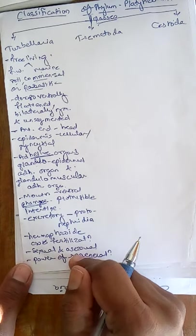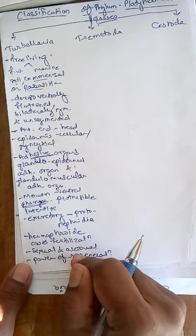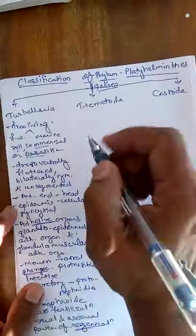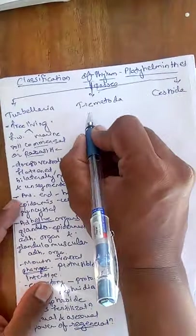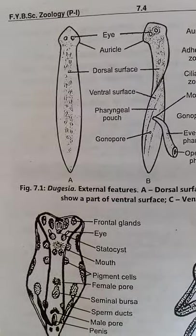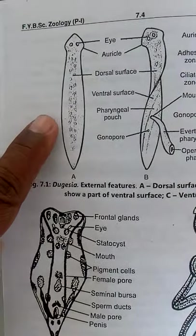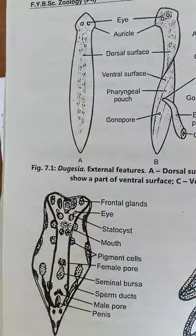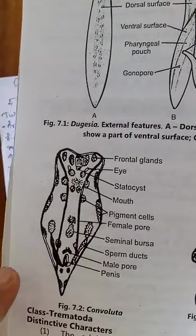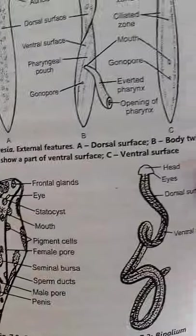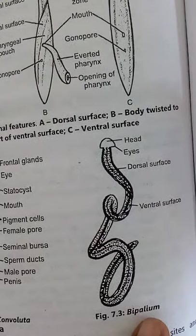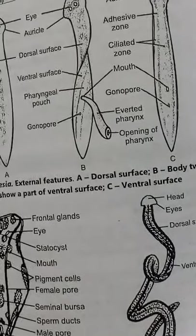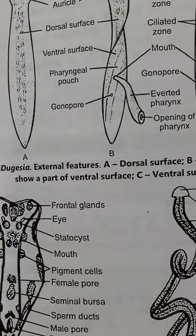Examples from Turbellaria include Planaria, Bipalium, Dugesia, and Convoluta. These are the examples from the first class, Turbellaria.